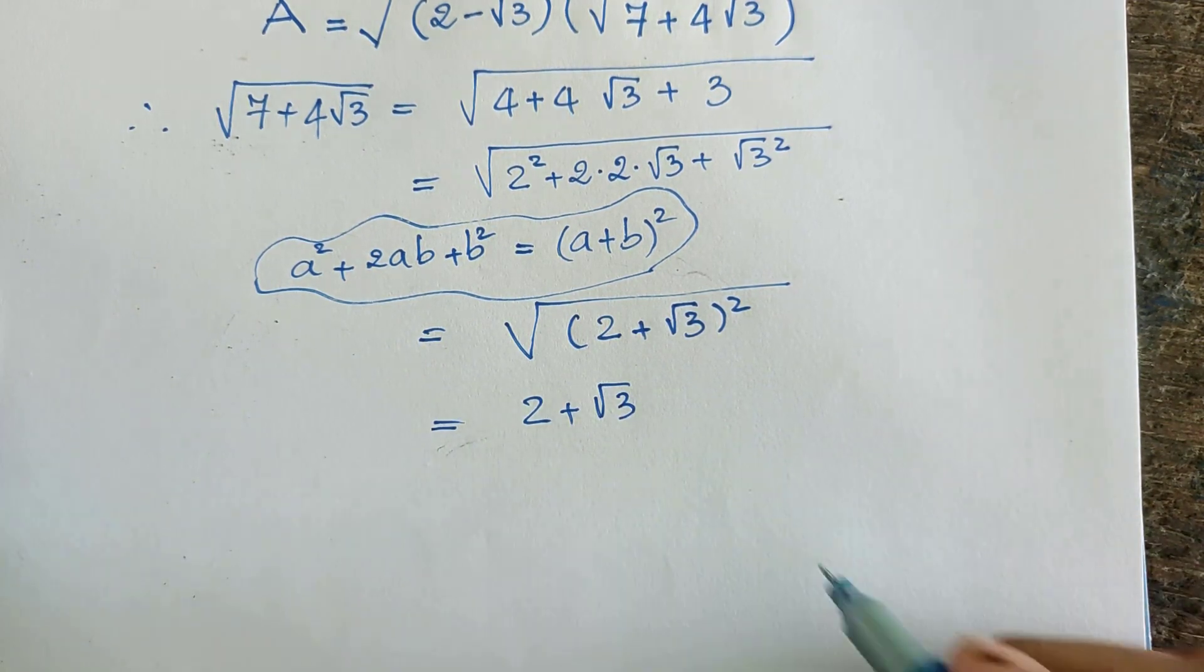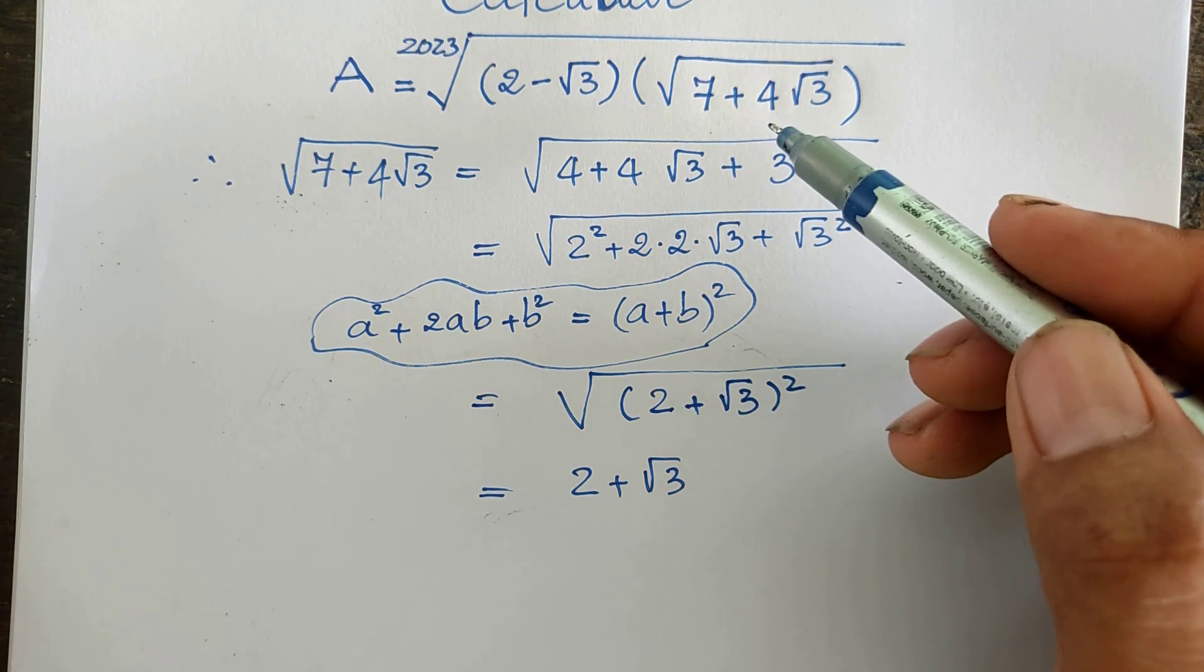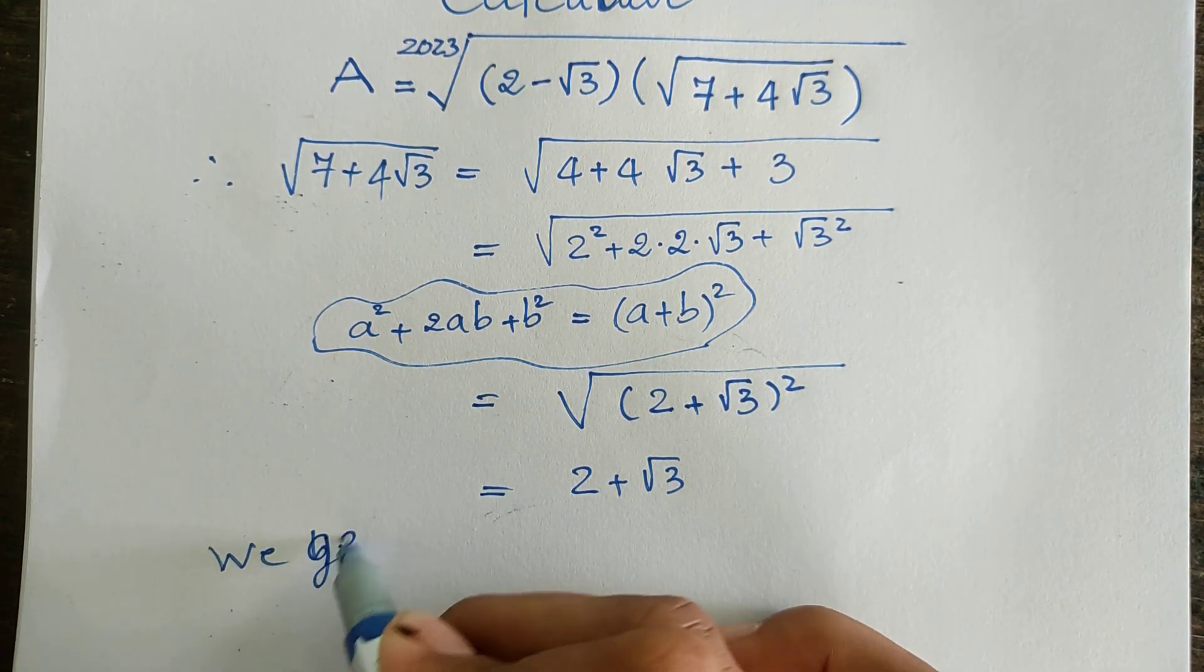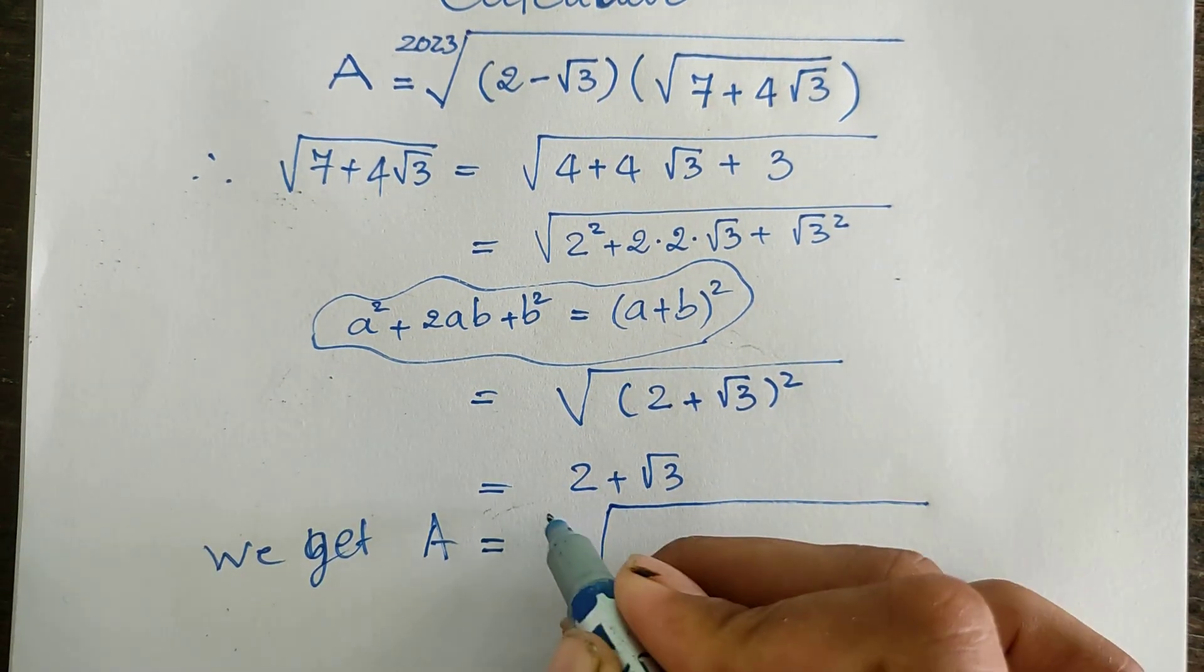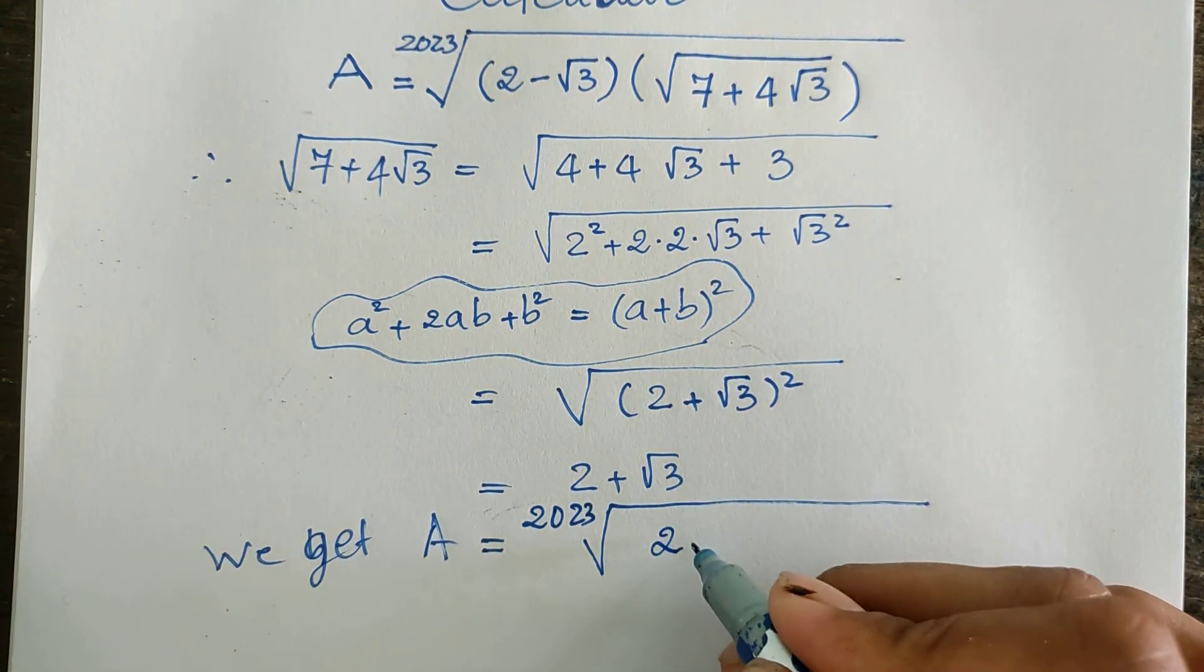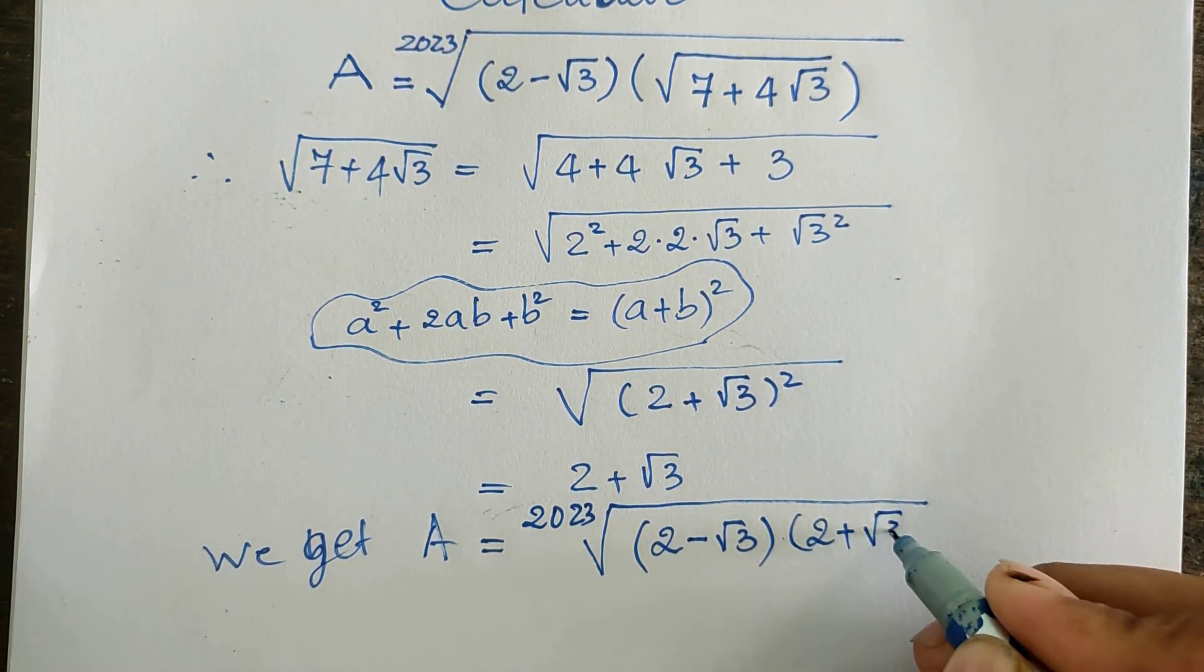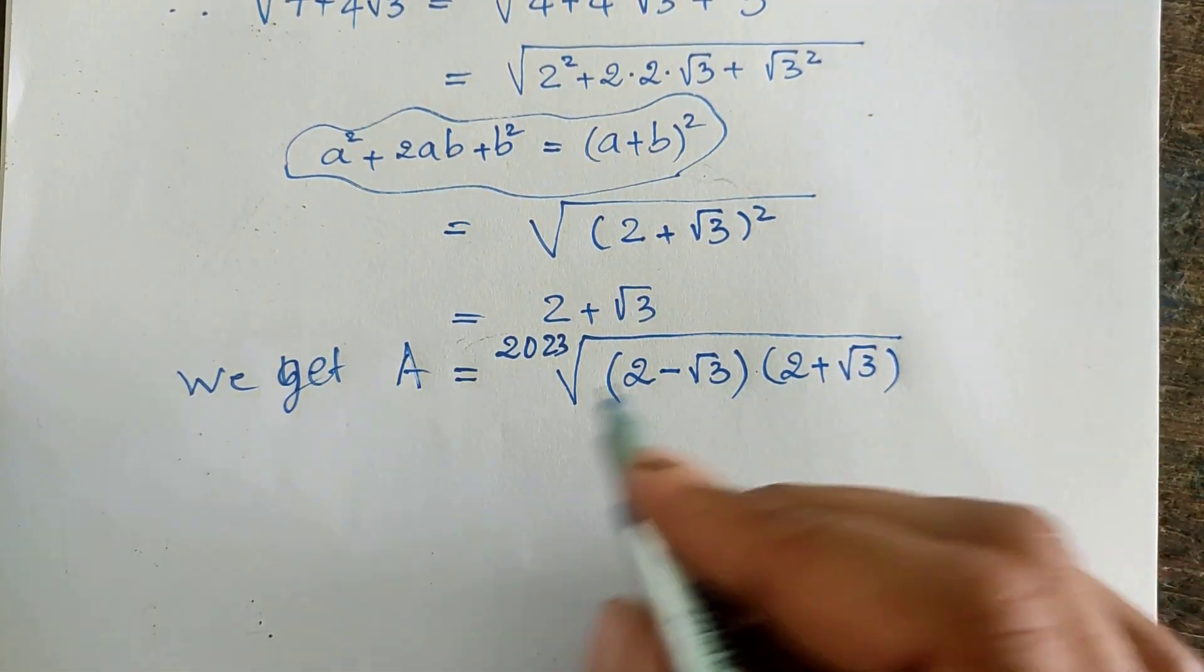And now we replace it in this part. We get the expression A equals 2023 root of 2 minus square root 3, multiplied by 2 plus square root 3. Now we use the rule that a minus b multiplied by a plus b equals a squared minus b squared.